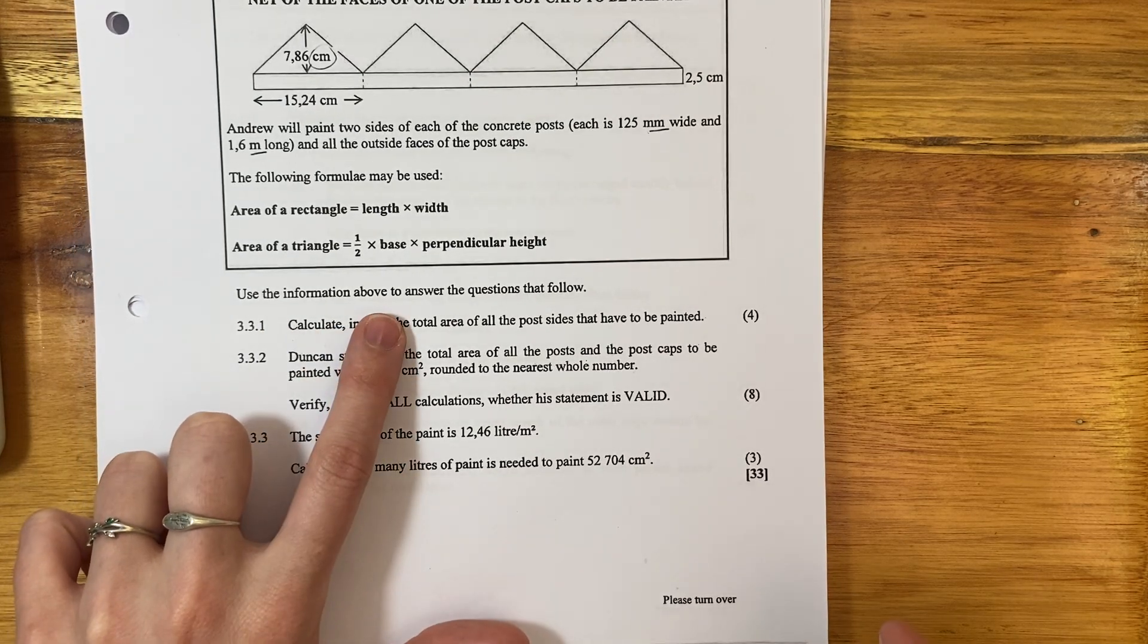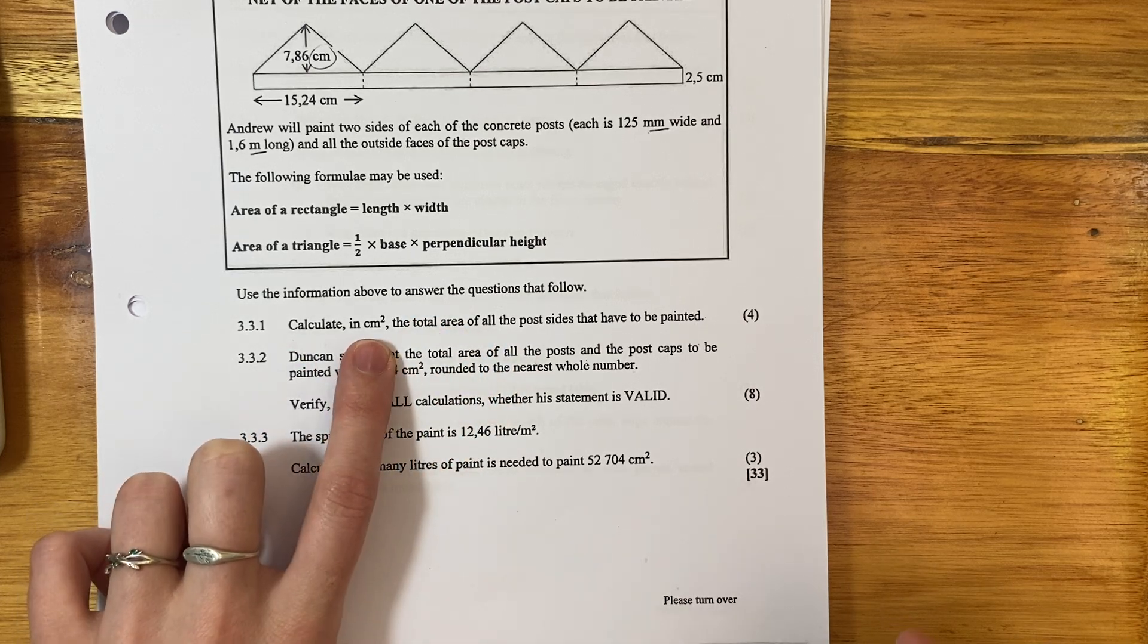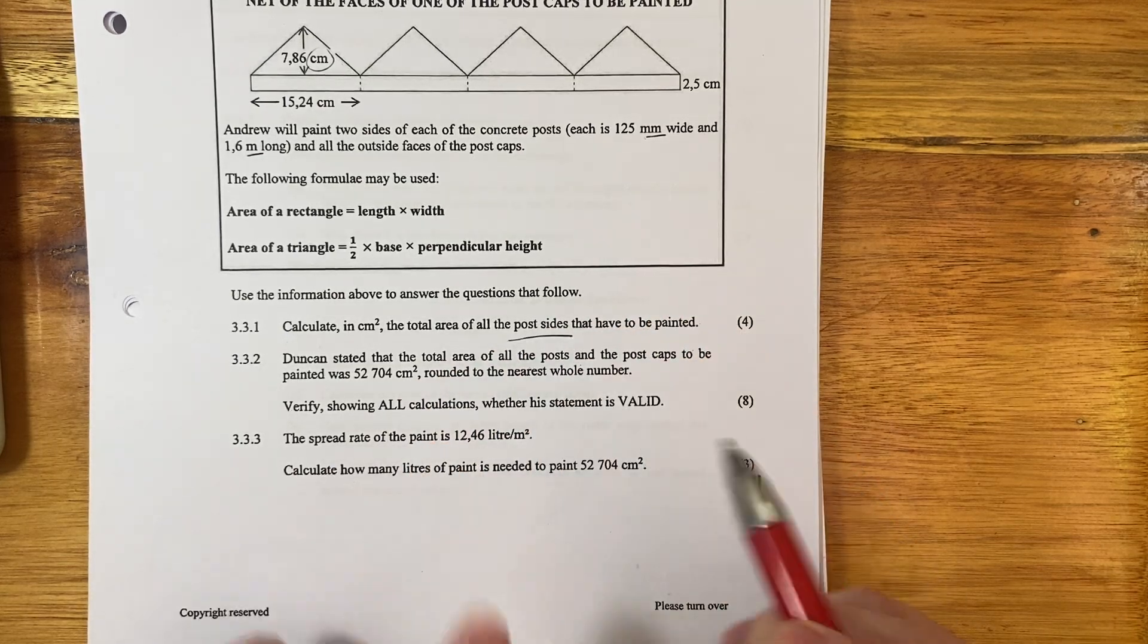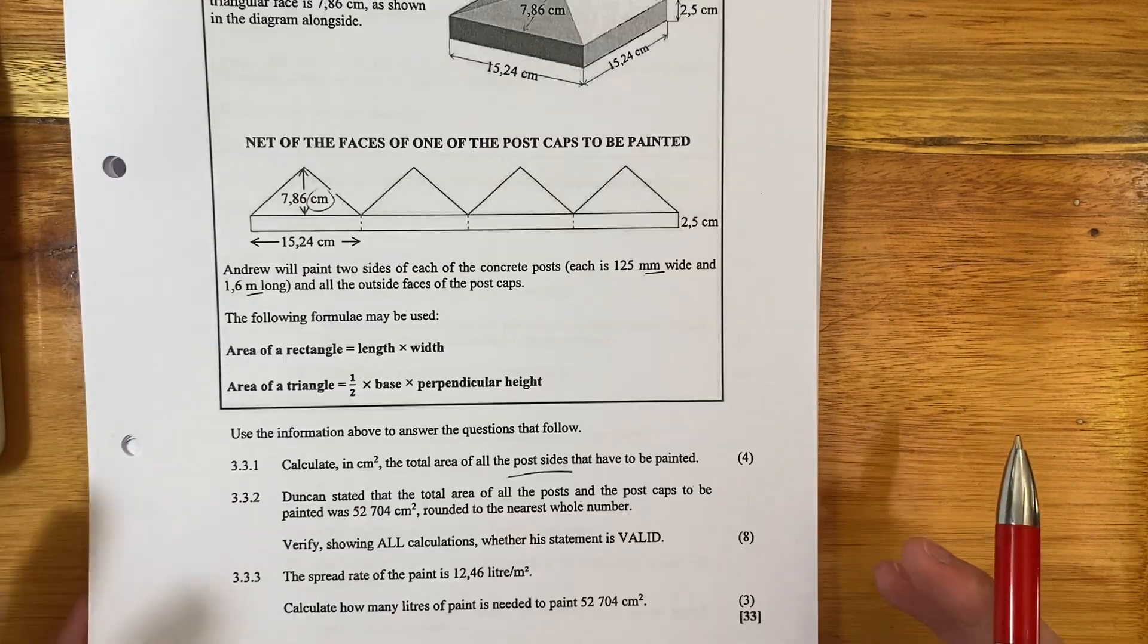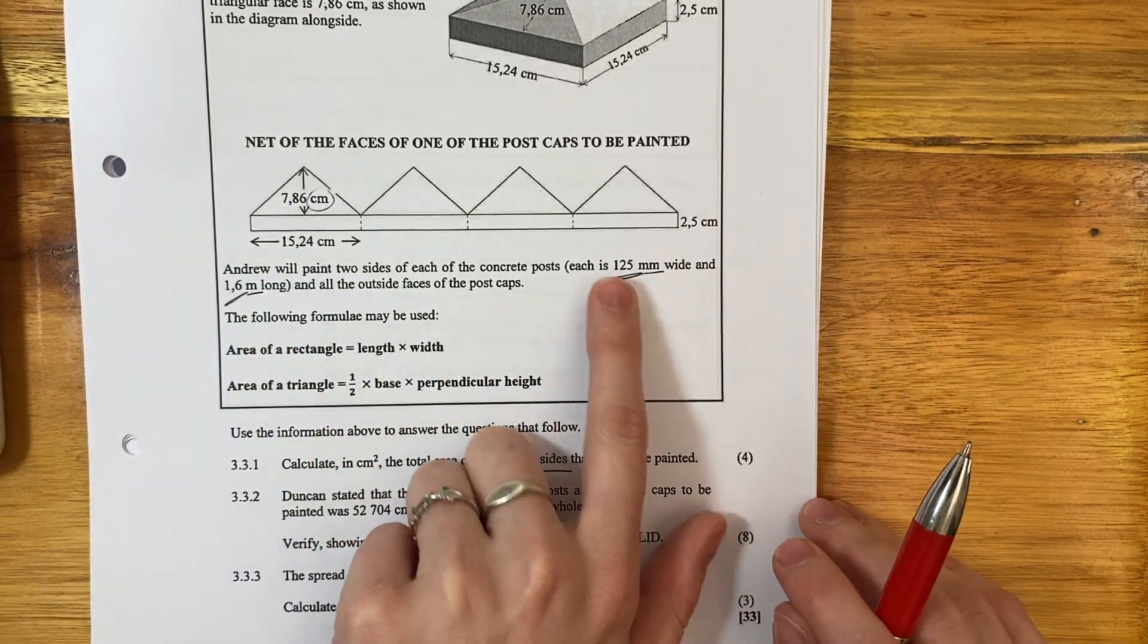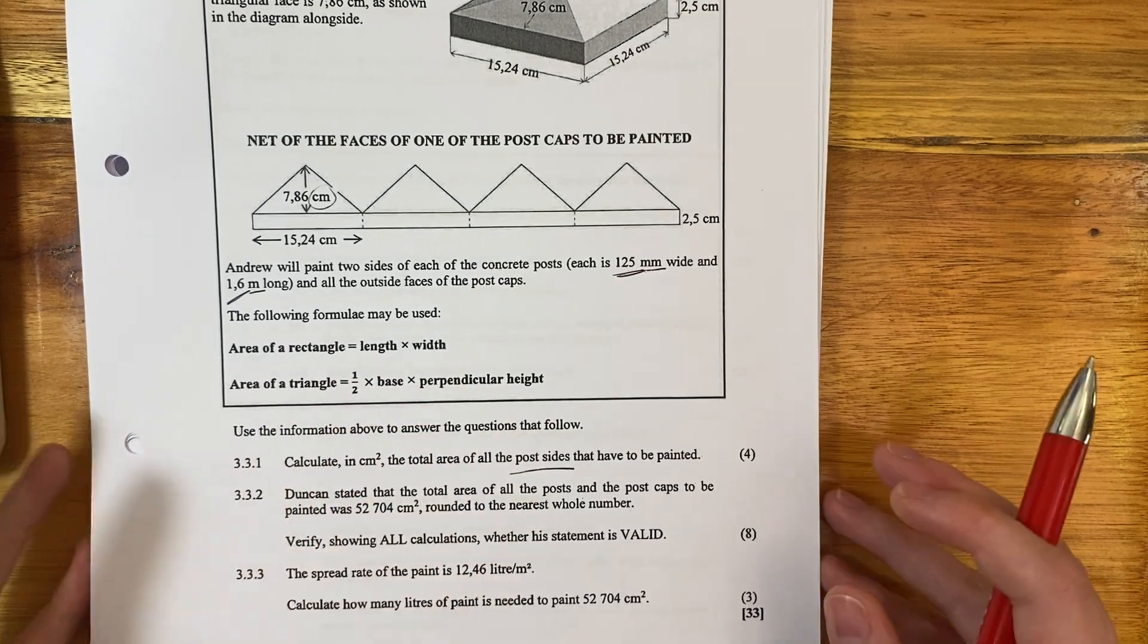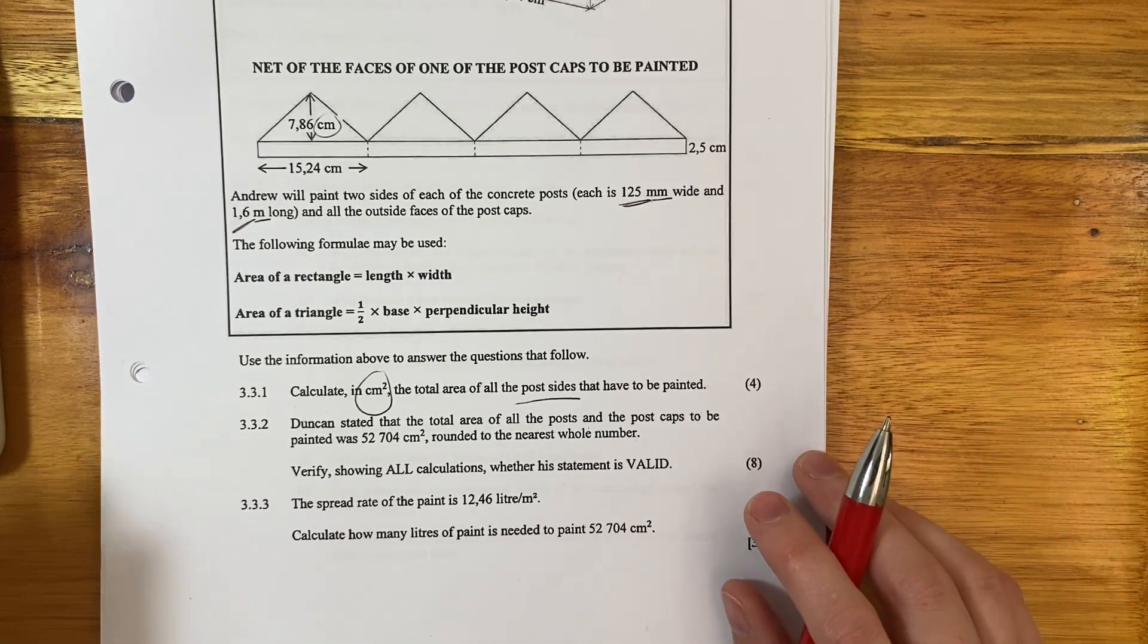Please note, he's not going to paint the underside of the post caps because those are going to be on top of the post. And the following formulas are given. Generally, you're going to use these if they're given. But let's not panic. Let's just go through this quickly and thoroughly to make sure we understand.